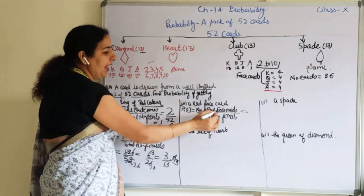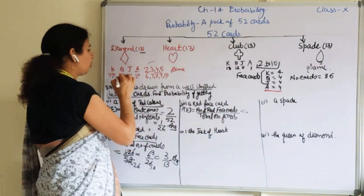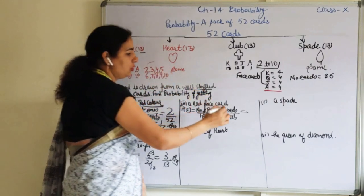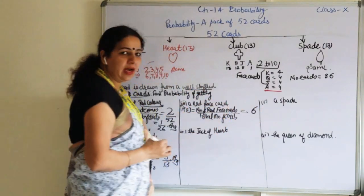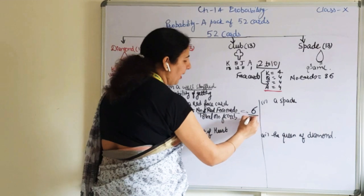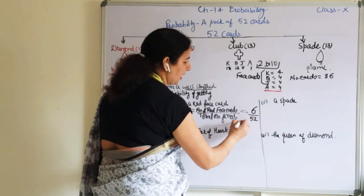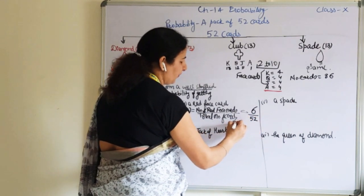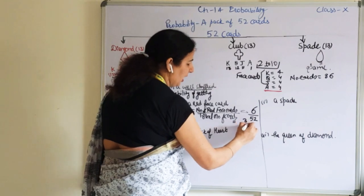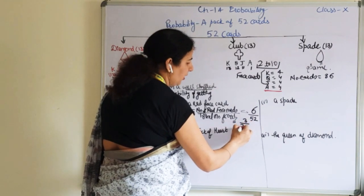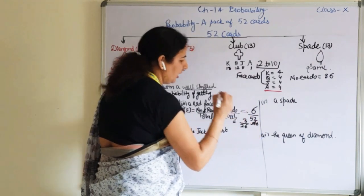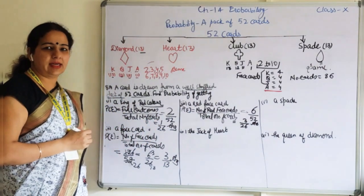Part three: find the probability of a red face card. We take the red face cards only — 1, 2, 3 from hearts, again 1, 2, 3 from diamonds — so total red face cards are 6. Probability = 6/52, which reduces to 3/26.